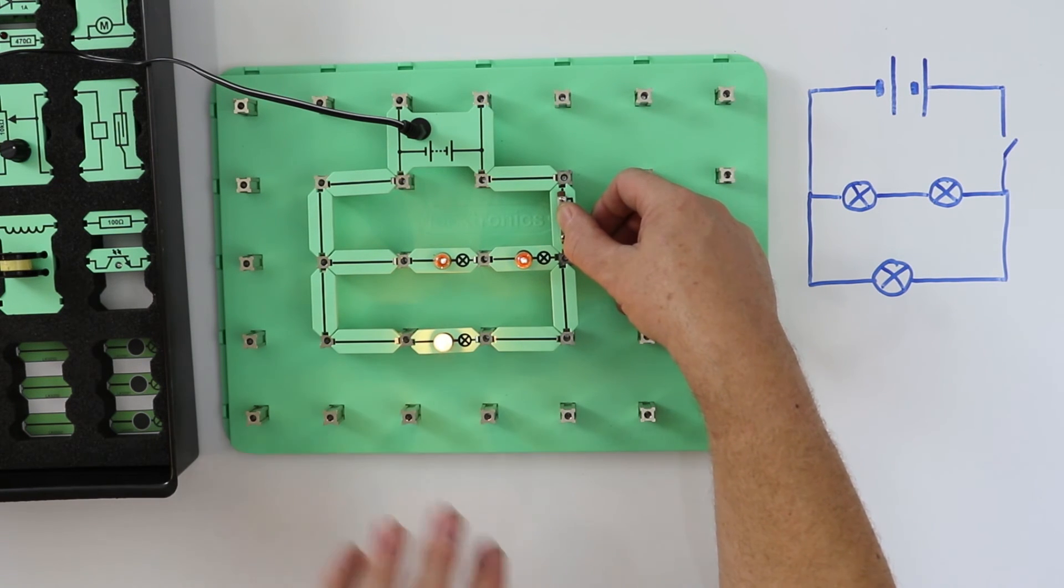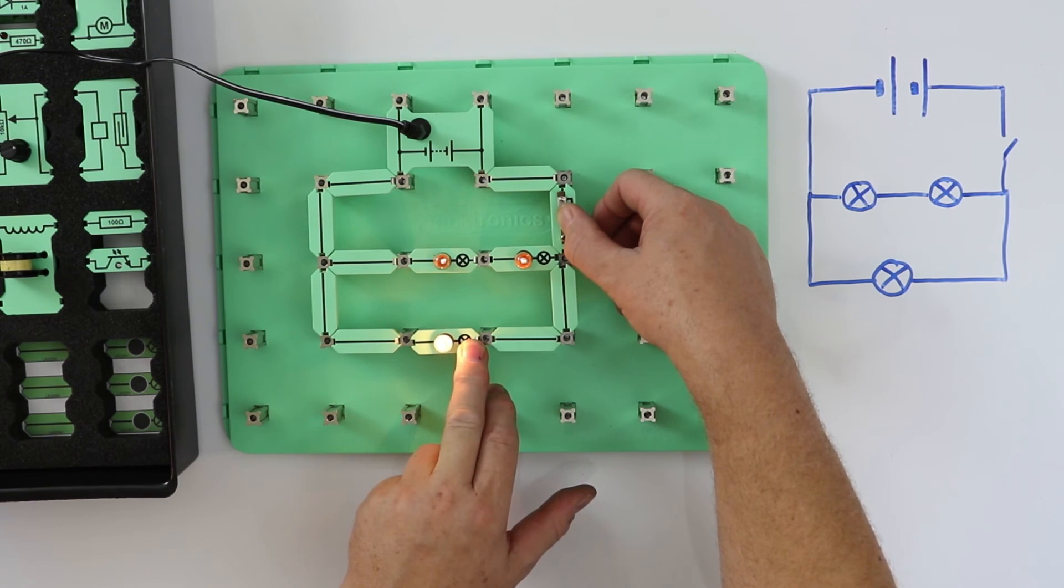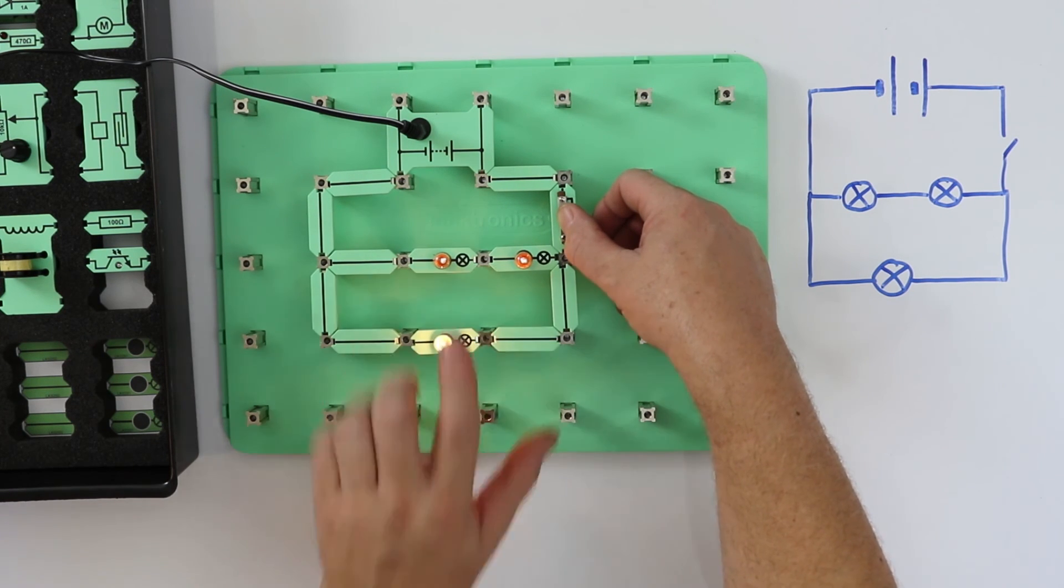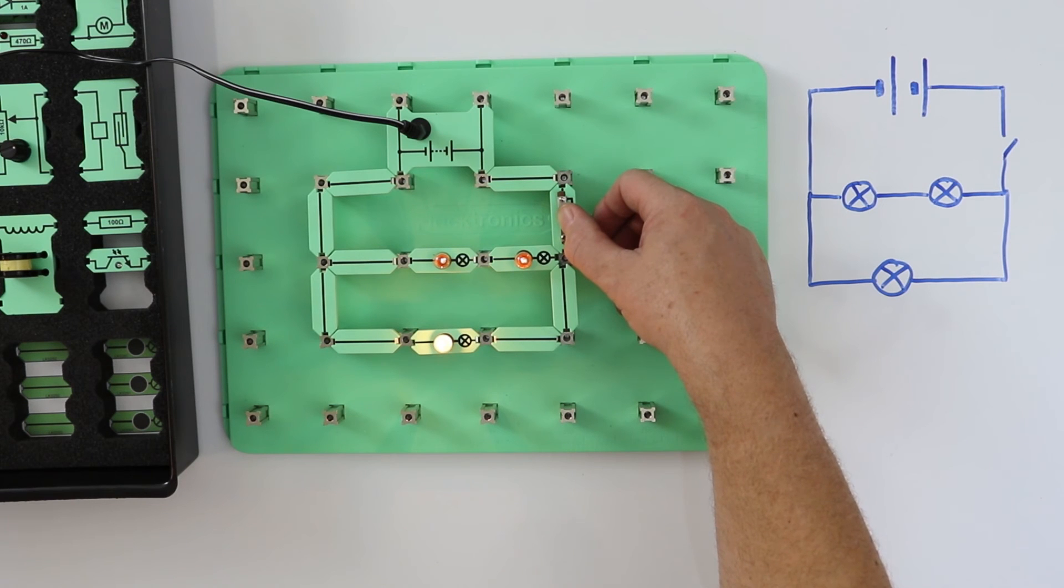This second circuit is not a series circuit, as there are two ways of getting from one side of the battery to the other. This bulb here is connected in parallel with the other two bulbs. These two bulbs are in series with each other.